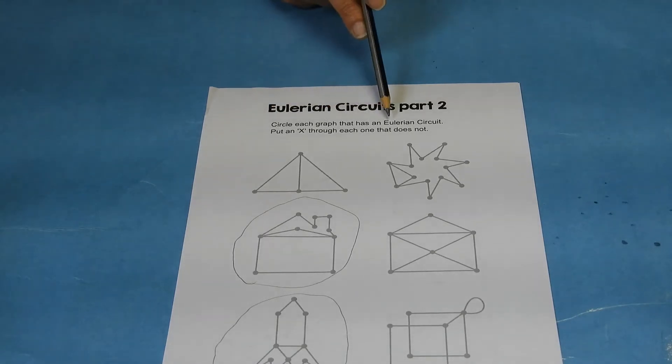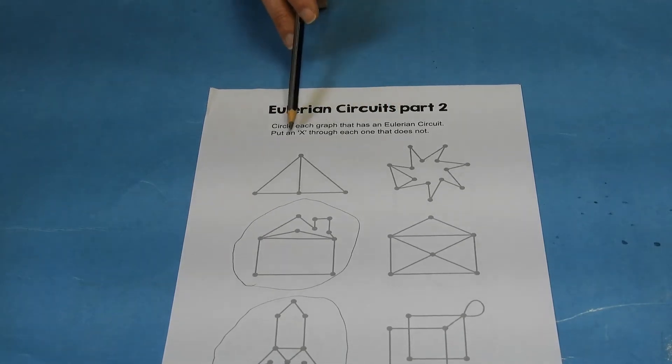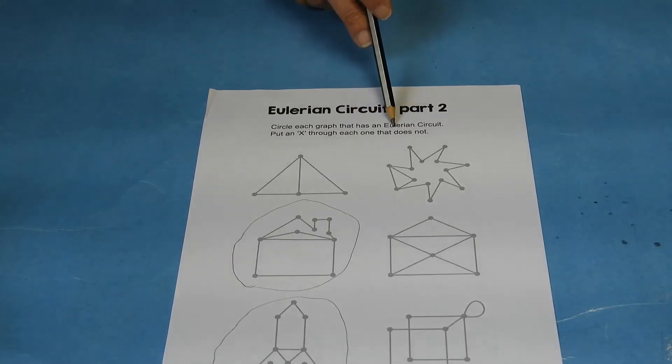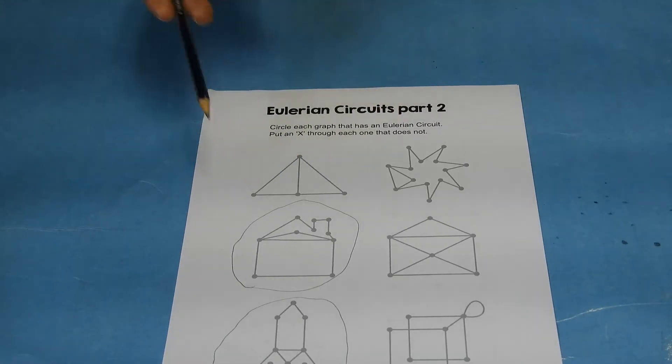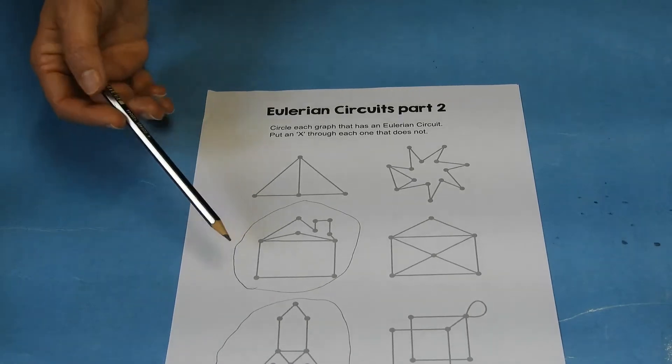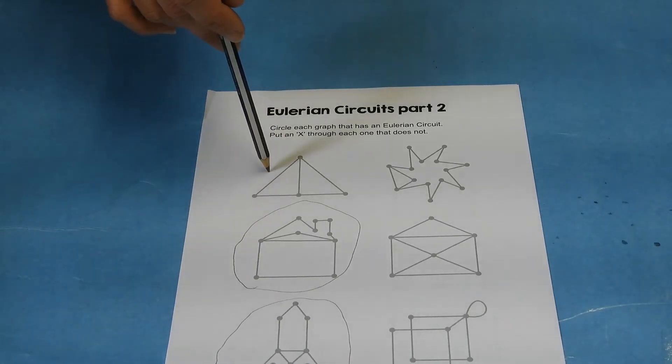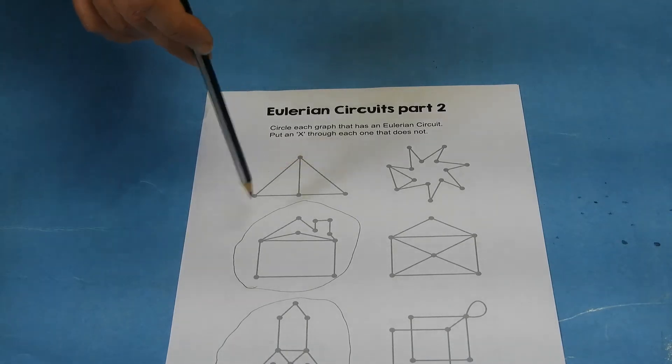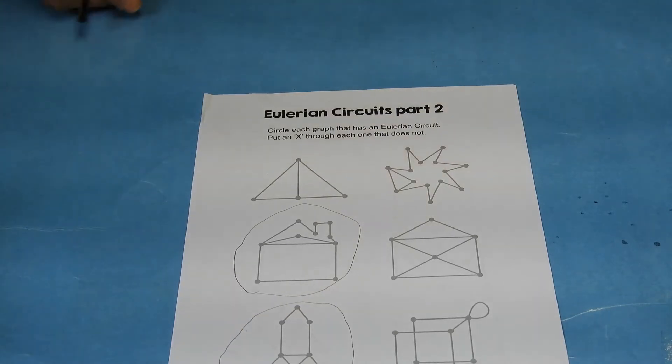It said circle each graph that has an Eulerian circuit, put an X through each one that does not. Well, you'll notice I didn't put an X through the ones that did and I circled the ones that worked. So if you did these and realized you could not do it without tracing over a line, you're correct because only these two actually worked.